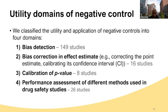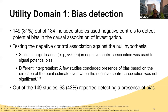We identified four main domains of utility for negative controls. The first was bias detection. Second, bias correction in the effect estimate and calibrating the confidence interval. The third domain was calibration of p-value, and the fourth domain was performance assessment of different methods of pharmacovigilance or analytical methods in pharmacoepidemiology. For bias detection, 81% of the 184 studies used negative control for this purpose. Most used statistical significance or p-value to rule out the presence of bias, and less than 50% of those studies reported detecting a bias.